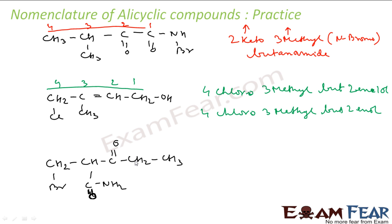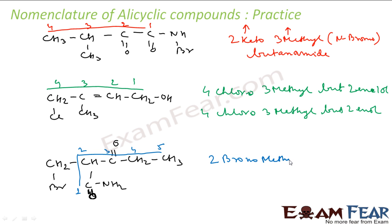Let's name this compound. Let's find the longest chain. This is my longest chain. I have to go down because I have to include the amine group — that is the main functional group here. Since the amine group is the main functional group, I give it number one, number two, number three, number four, and number five. I have one prefix at second position, that is bromomethyl — so 2-(bromomethyl). Since this was a complex substituent, I wrote it in braces.